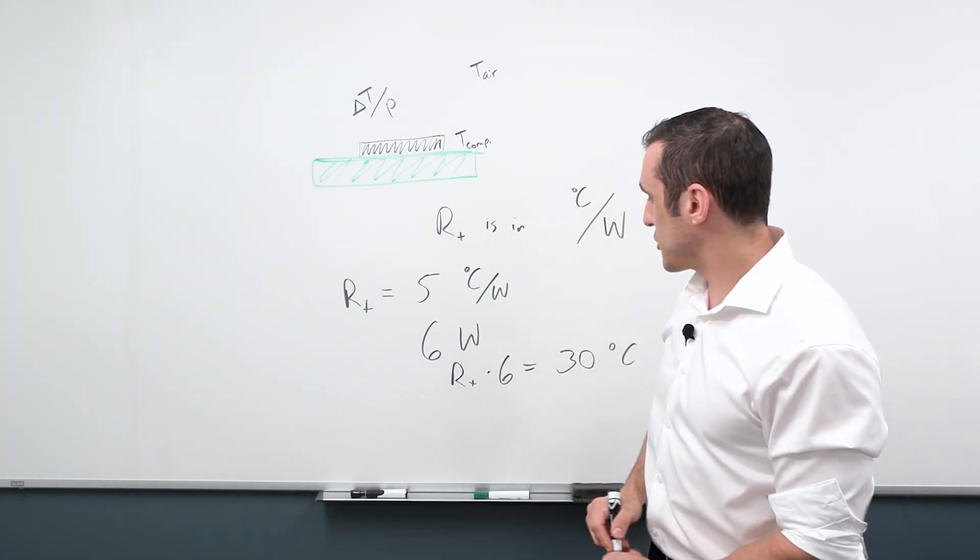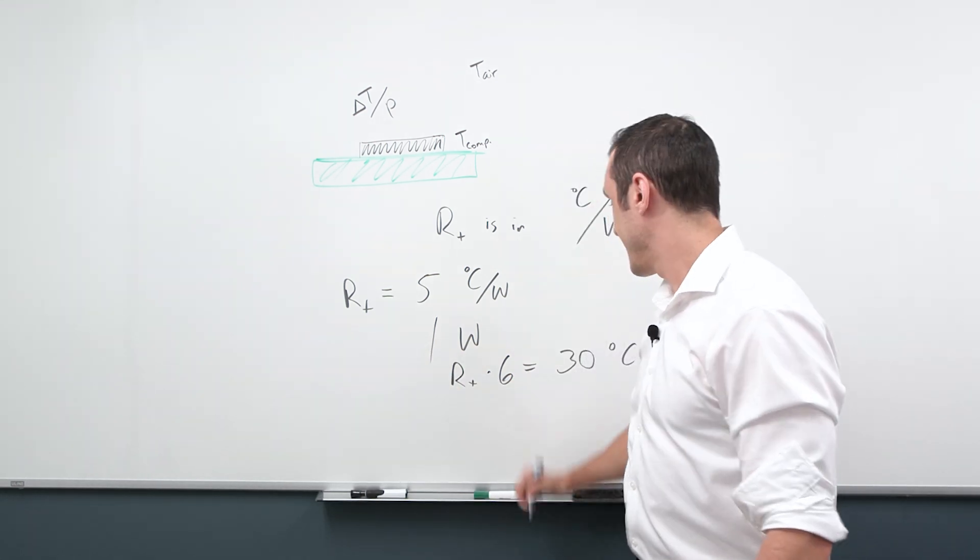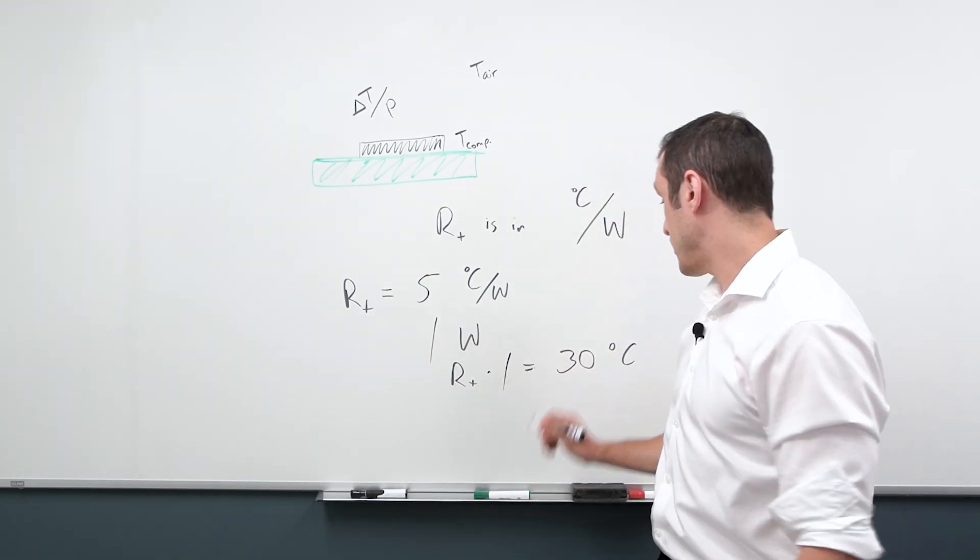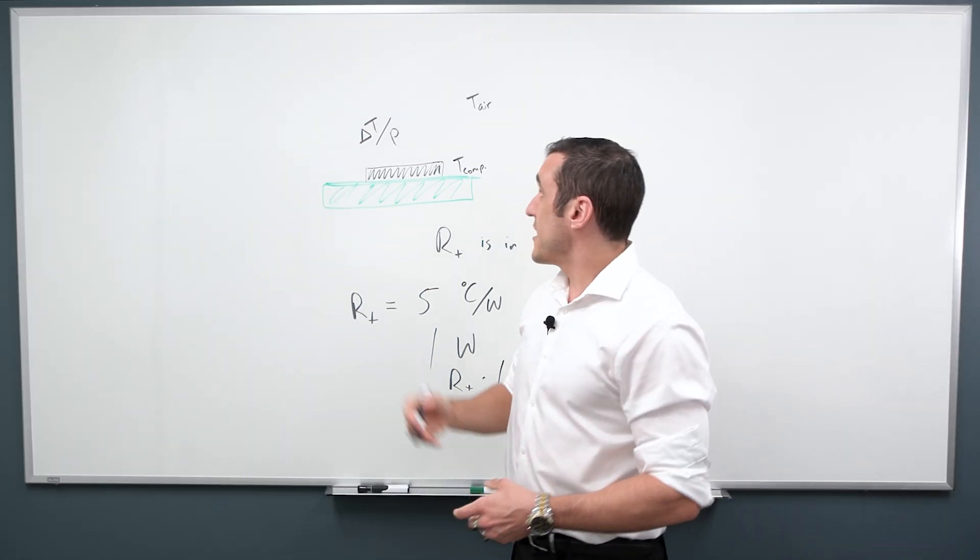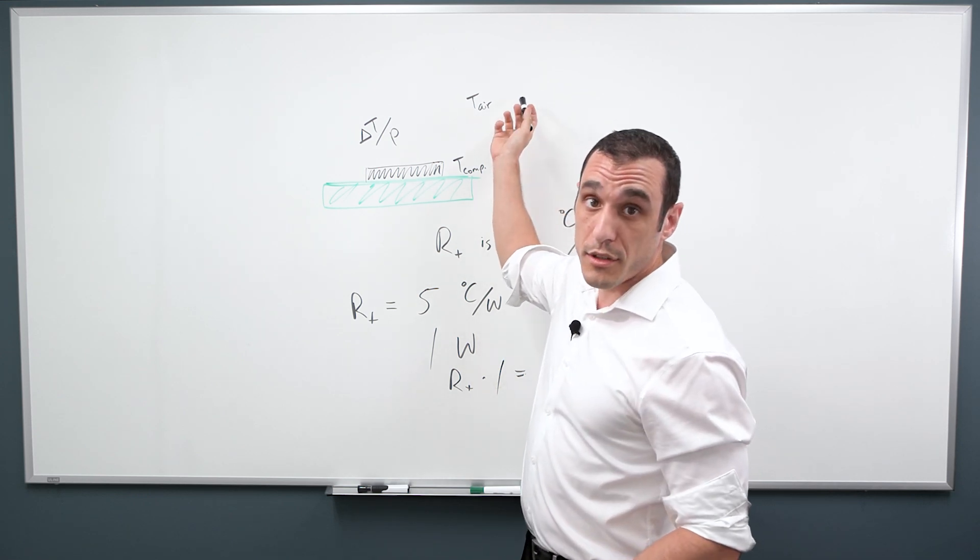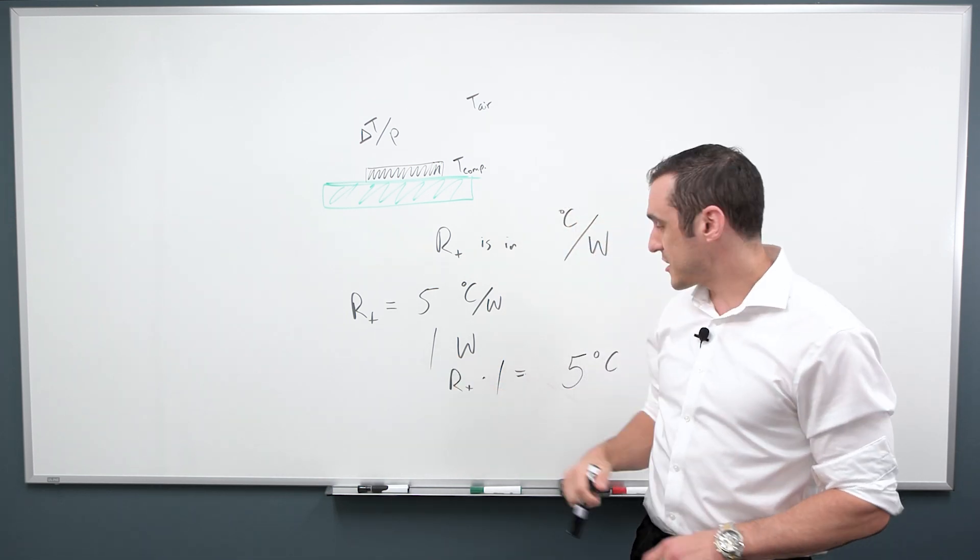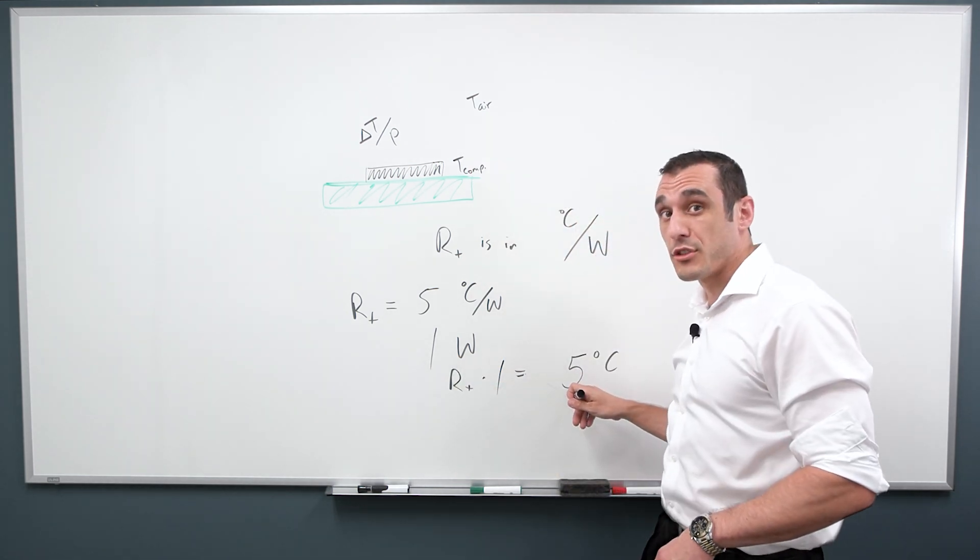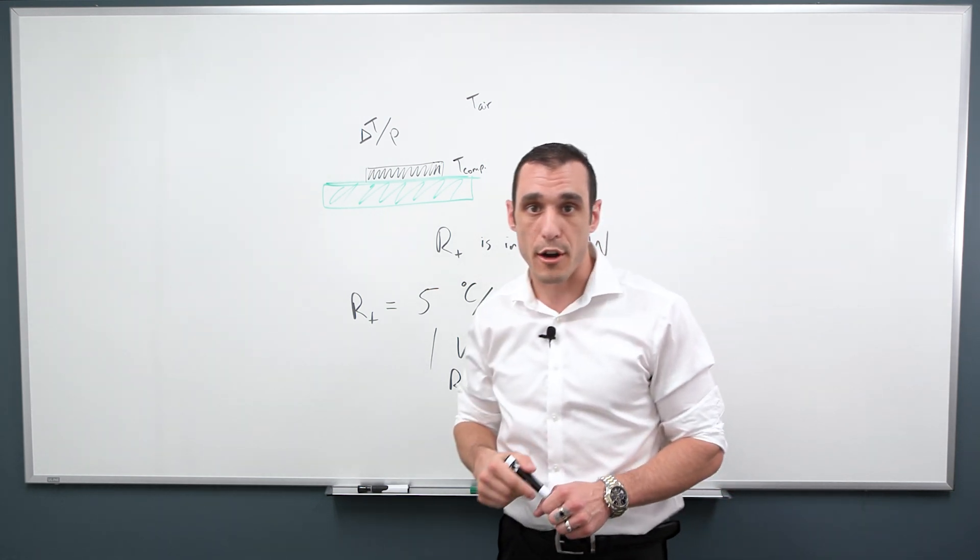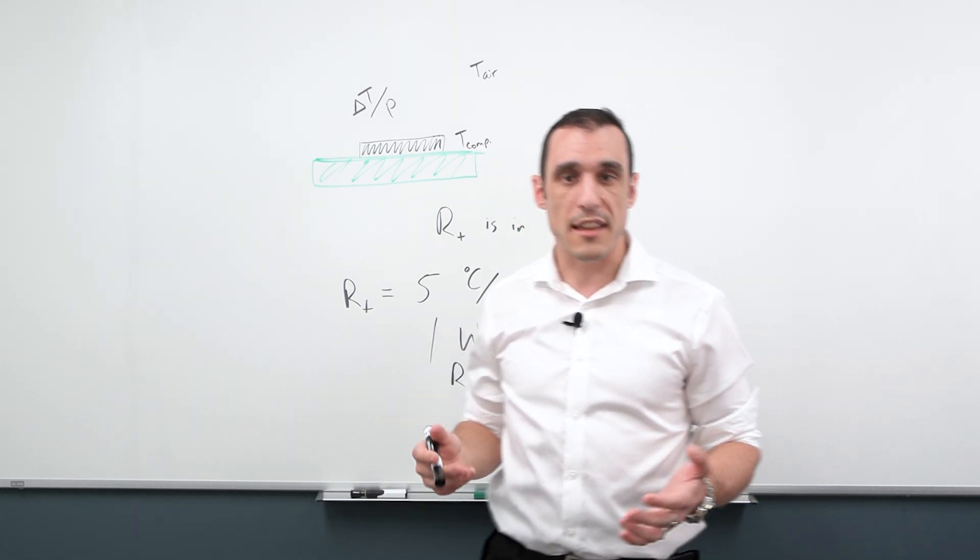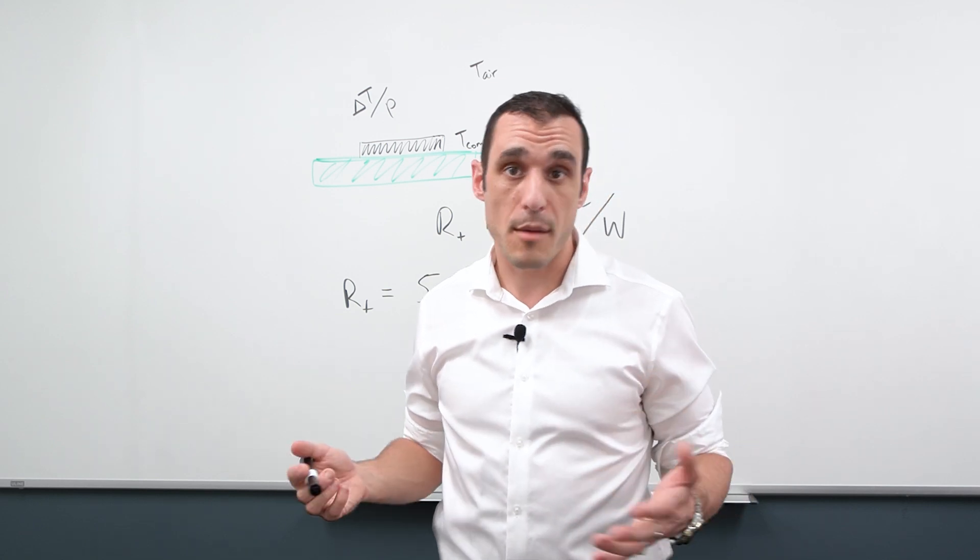So if your ambient temperature goes up, then your component temperature also goes up because this tells you a temperature difference, not an absolute temperature. We know it's not an absolute temperature because let's just say instead of 6 watts we had 1 watt. Then we'd have RT times 1 here, and we wouldn't have 30, we would have 5. So this is a really useful metric because it gives you a way to estimate what the temperature would be of the component while it's operating.